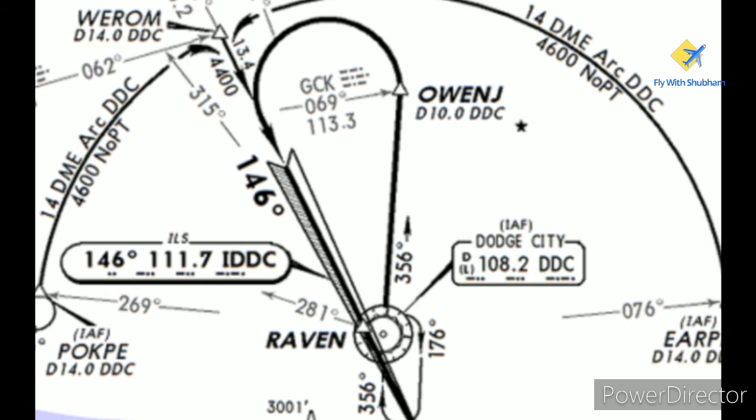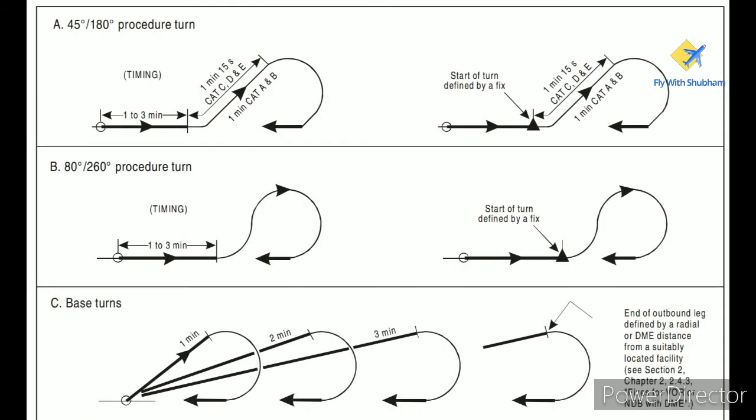This is what a teardrop turn looks like on an approach plate. Here you can see the simple basic difference between all of these course reversals.